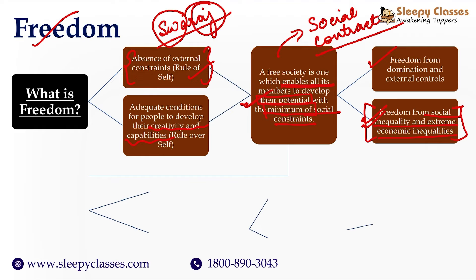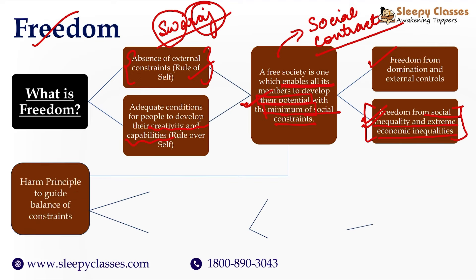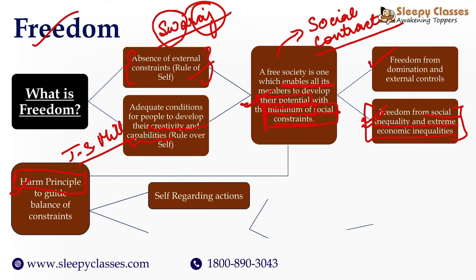As Dr. Ambedkar also pointed out, if we need genuine freedom, political freedom is not enough. In economic aspects, extreme differences between the rich and the poor are absolutely incorrect — pushing people below the poverty line who cannot fulfill their basic needs. Now we decide the meaning of minimum or reasonable constraints.